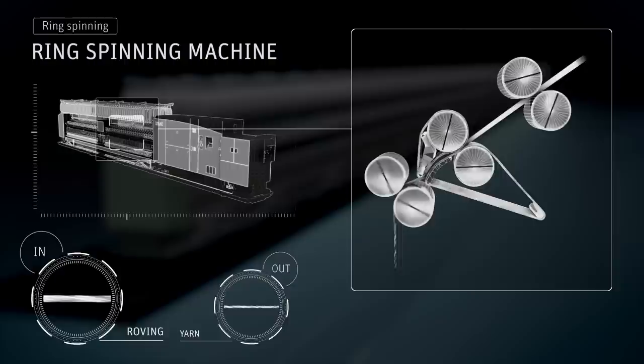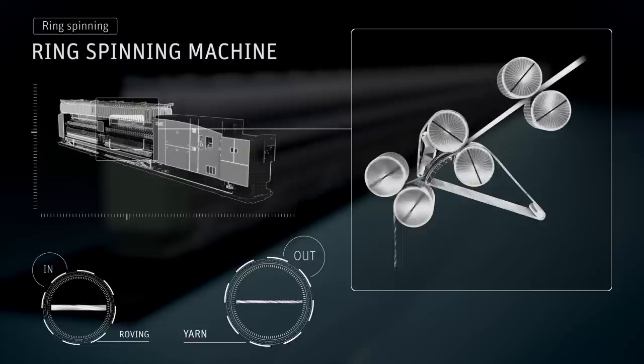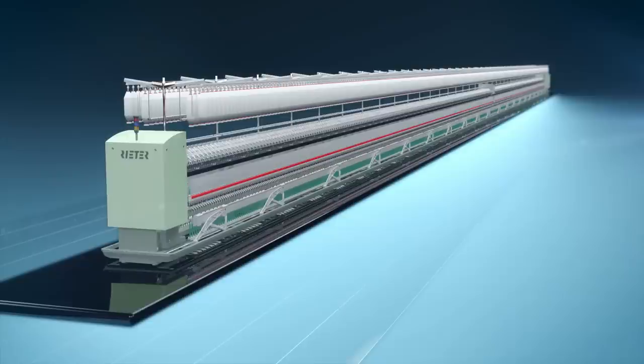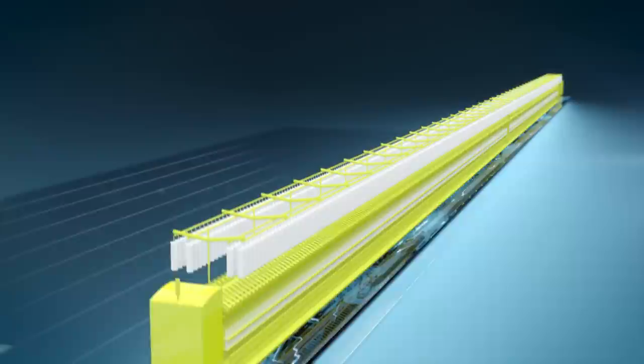The roving is fed into the drafting system in which the fibers are drawn and parallelized. The fine sliver is wound onto the tube by means of a rotating traveler on the ring. Through this process, the yarn receives its final twist. The finished ring yarn is marketed under the name Kom4Ring.